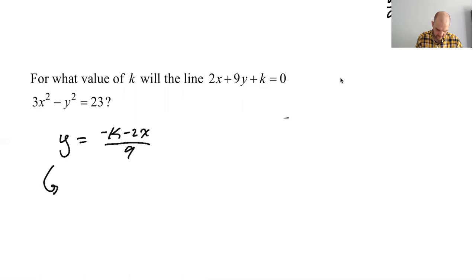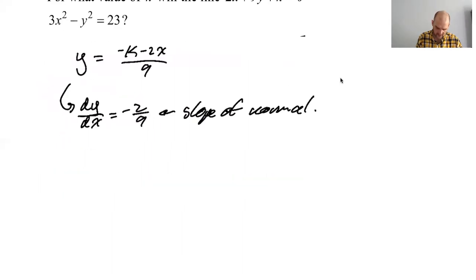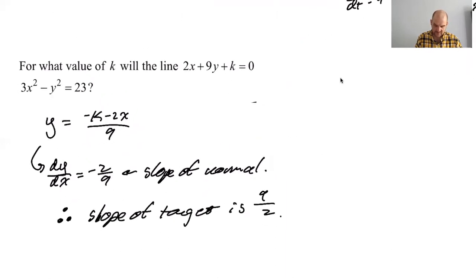So I'm going to solve this for y. And then that line is normal to the curve. So the slope of that is the opposite reciprocal of the slope of the curve at the point. So that means that y equals like negative k minus 2x over 9. So dy dx. I mean, you don't really need to find dy dx negative 2x. This is the slope of the normal. If that's the slope of the normal, I'm going to say, therefore, the slope of the tangent is the opposite reciprocal.